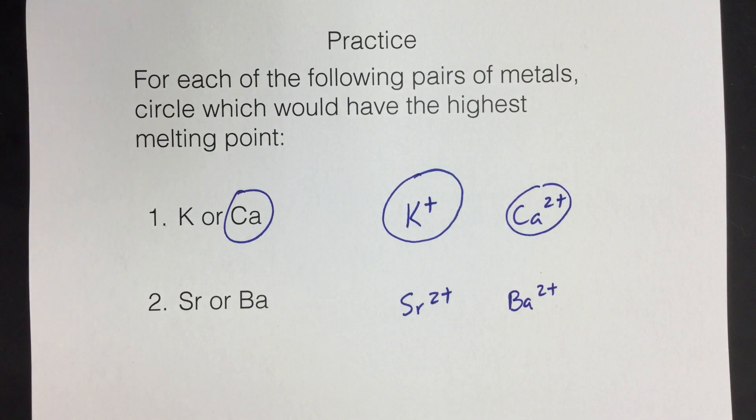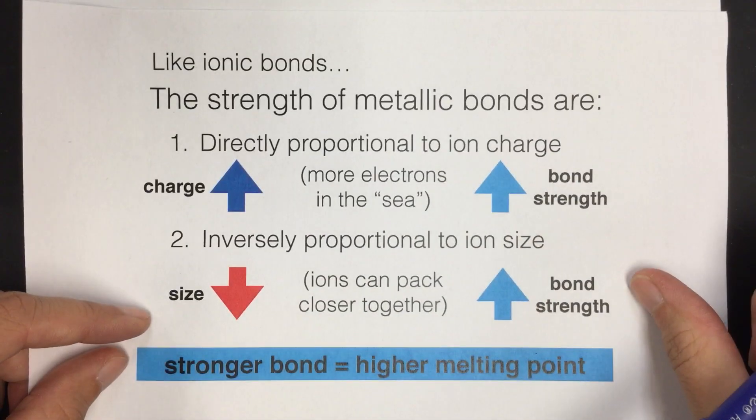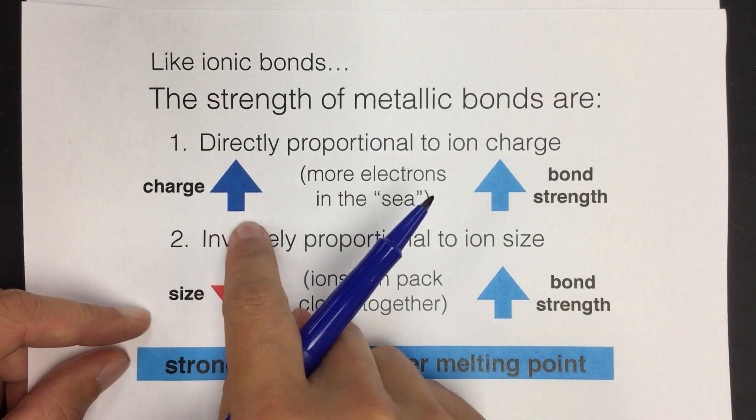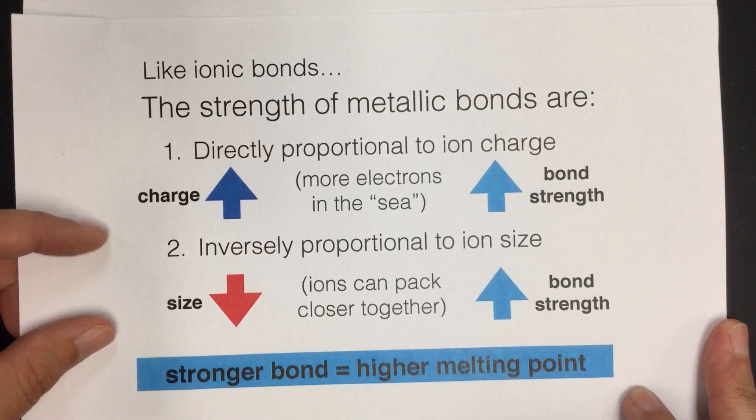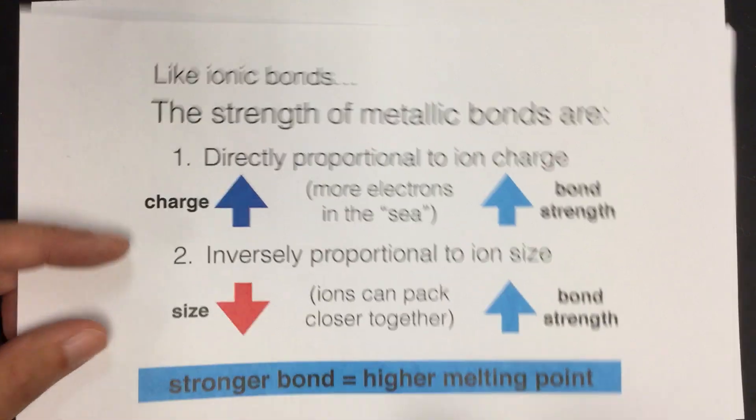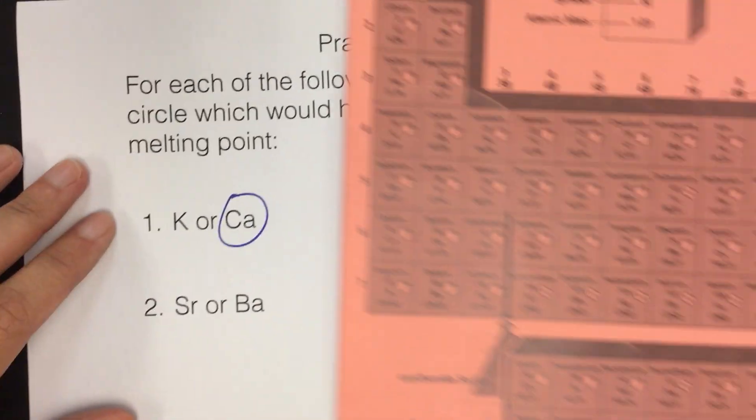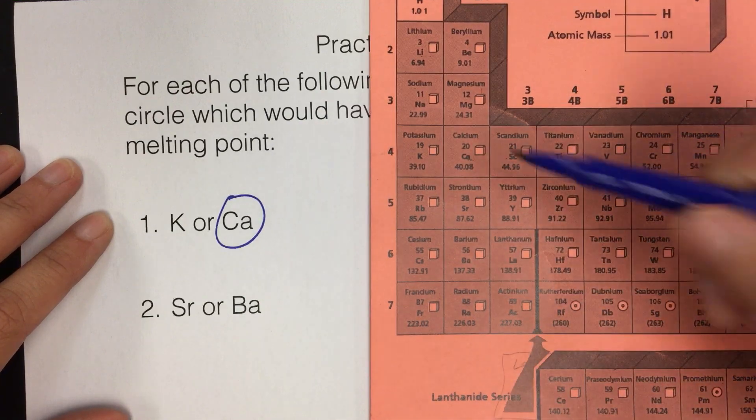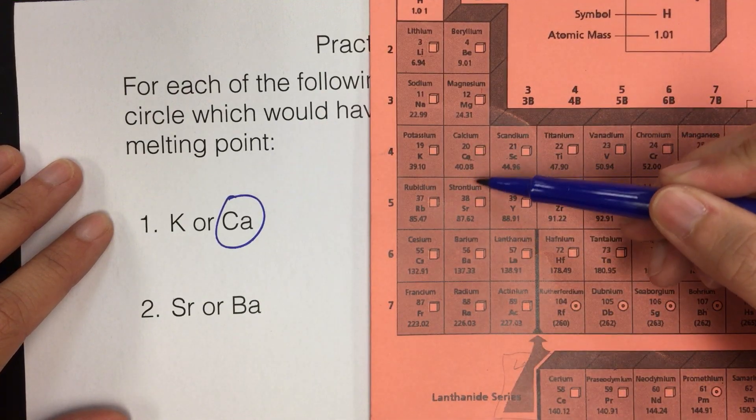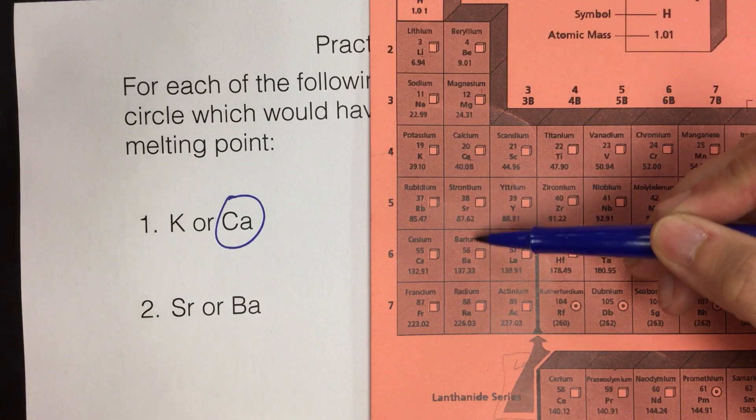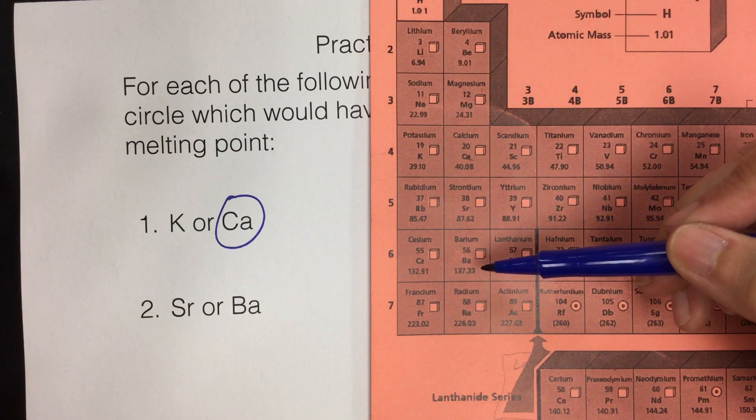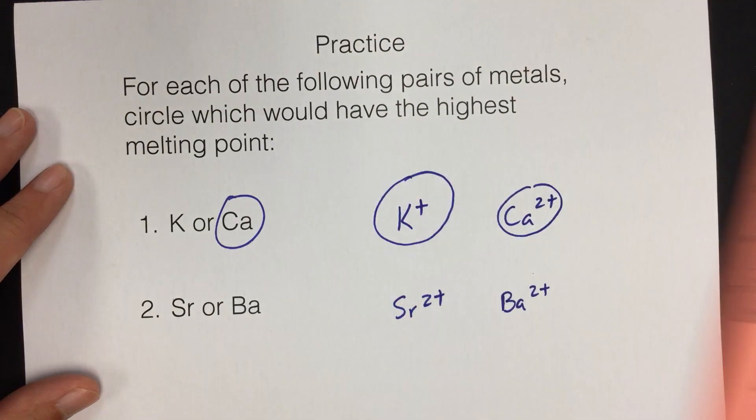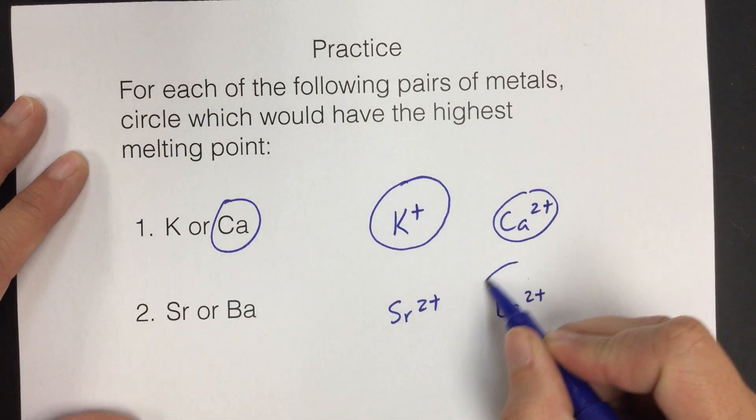I know that when I consider charges, I'm not going to get anywhere because they have the same charge. So we want bigger charges, but since they're both 2 plus, we can't figure out the answer here, so we need to look at size. We're going to compare strontium and barium in the same family. We know that the trend for radius as we go down a family, we're adding energy levels, so it will be bigger as we go down. So that means that barium is going to be larger, so I'll show that in my drawing.